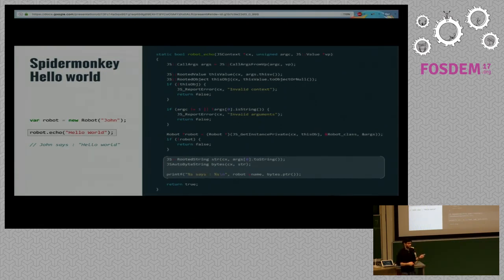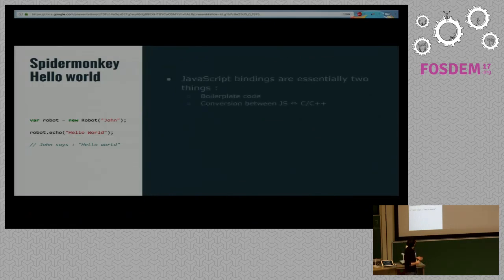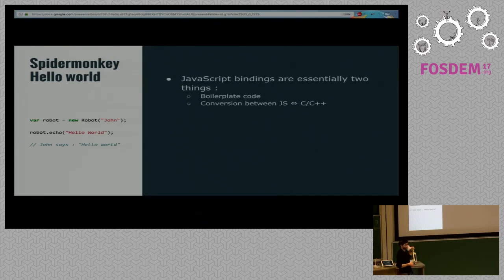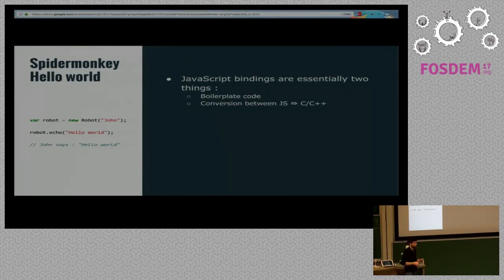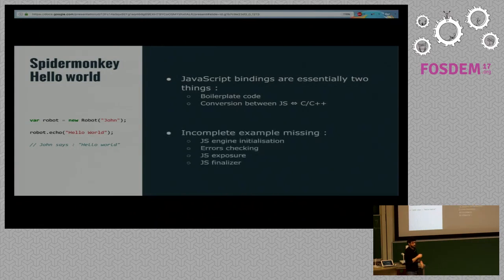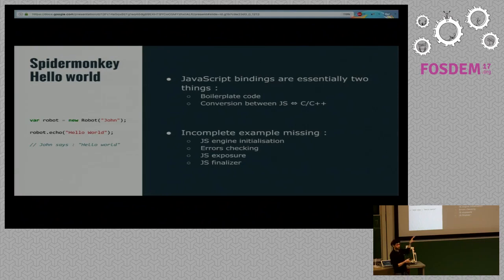This is not really complicated, but now imagine you have a lot of bindings to write. You'll notice that in this short example alone, you spend most of your time doing argument checking and conversion between JavaScript and C or C++. This gets boring quickly. Also, this example is incomplete — it's missing the JS engine initialization, error handling, JS exposure, and JS finalizers. I kept it short to fit the screen.